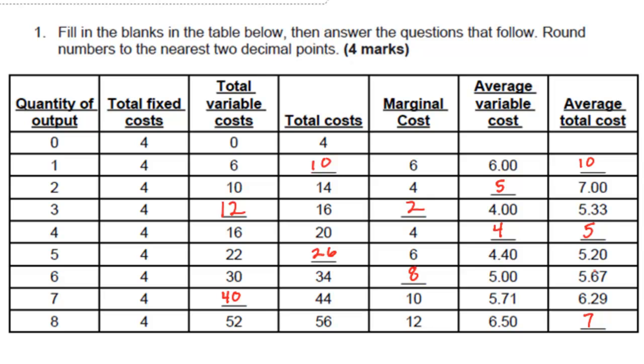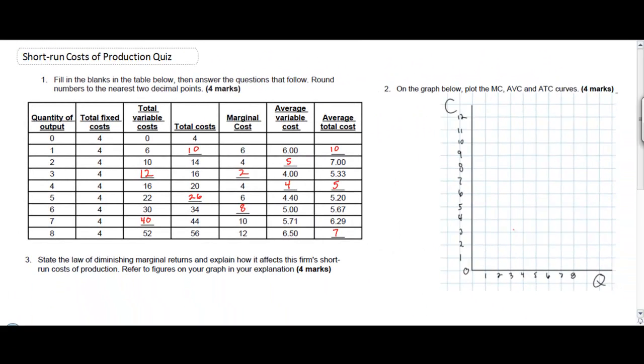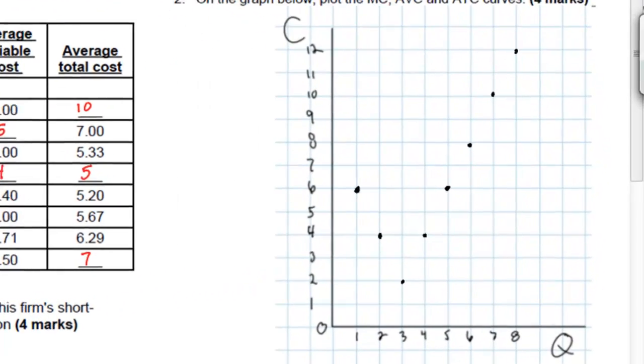In the next part we're going to plot the marginal cost, the average variable cost, and the average total cost in our graph on the right. As I plot these points from the table, observe the shape of the three cost curves that I'm graphing.